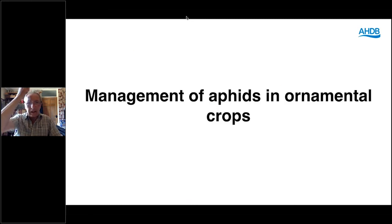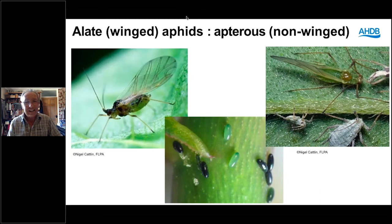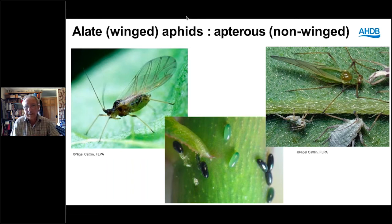Management of aphids: where and when aphids start to migrate in, the biological controls available, and the chemicals. You may come across the term alate aphid — that's the winged form — or apterous aphid. A lot of aphids have a double-barrelled name, frequently referring to a soft summer host plant and a harder woody host plant. So for Myzus persicae, the common name is the peach potato aphid — potato being the summer host, peach being the hard woody winter host where they lay their eggs.